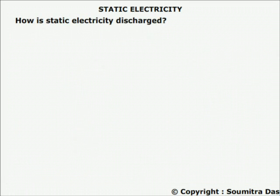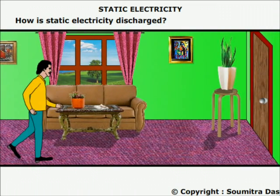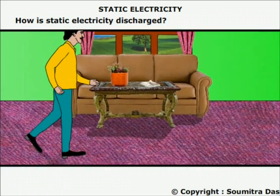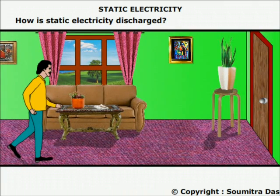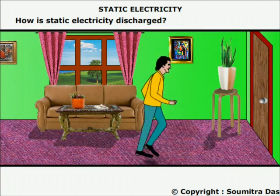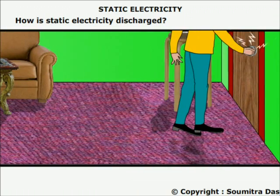How is static electricity discharged? Suppose a man is walking briskly in a room whose floor is carpeted with a rug. While walking, the man acquires negative charge due to friction with the carpet. When he touches the door knob, which is a conductor, electrons flow from his body to the knob and he feels an electric shock. This is an example of electrostatic discharge by conduction.